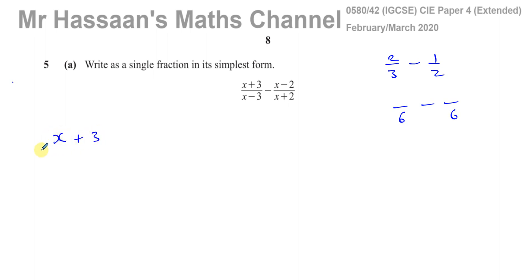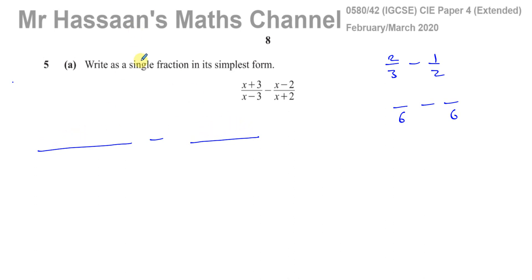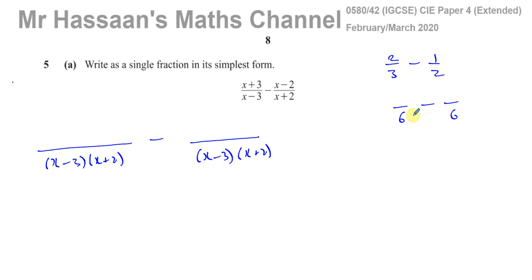I have x plus three over something minus x minus two over something. The LCM of the denominators is going to be x minus three times x plus two. That's the common denominator for these two terms.